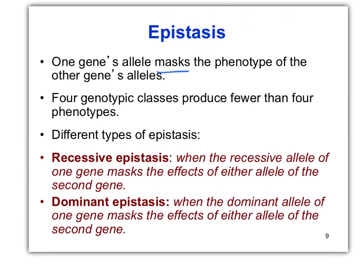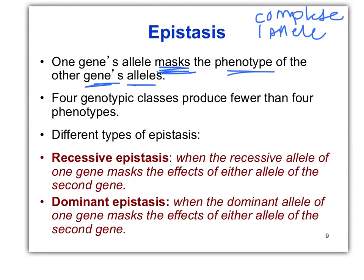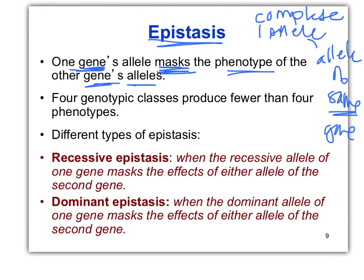Epistasis: one gene's allele masks the phenotype of another gene's allele. What does this sound similar to? That sounds like complete dominance. But complete dominance is one allele masking another allele of the same gene. Epistasis is one gene's allele masking the phenotype of another gene's allele — so a gene interaction.